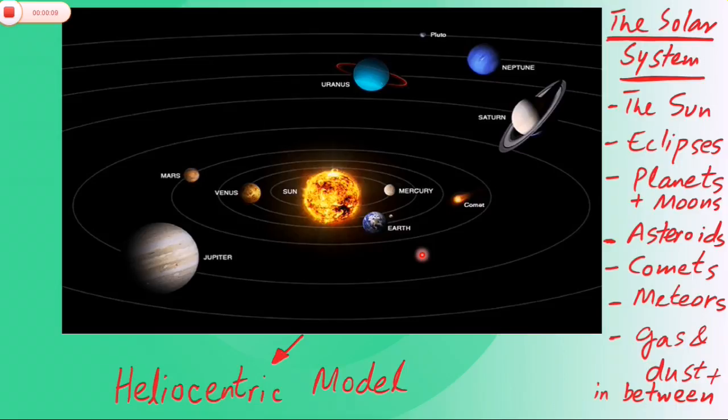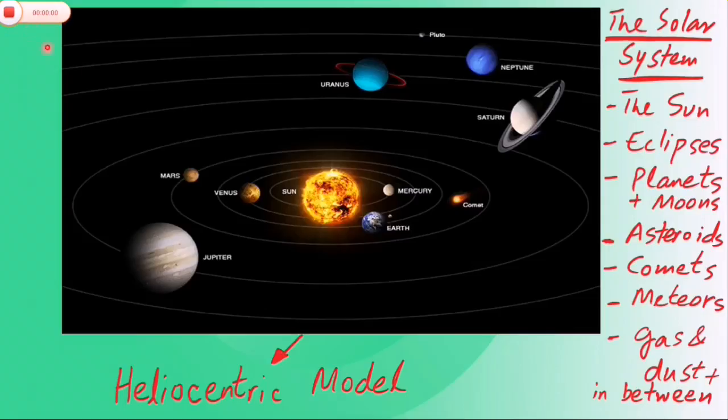Now Kepler discovered that orbits of the planets are like ellipses and not circles. Kepler discovered that orbits of the planets around the Sun are shaped like ellipses and not circles, that is, they are like squashed circles. His work provided one of the foundations of Newton's theory of universal gravitation.